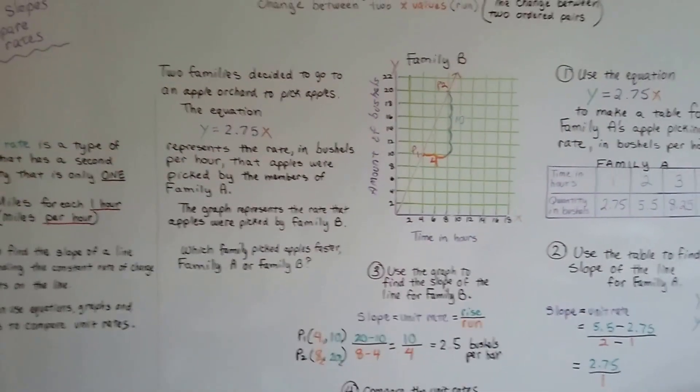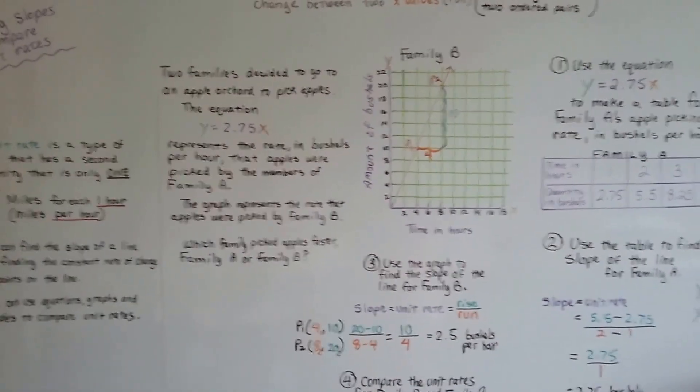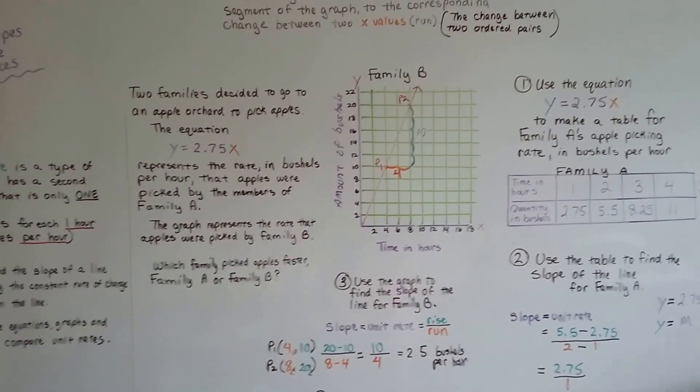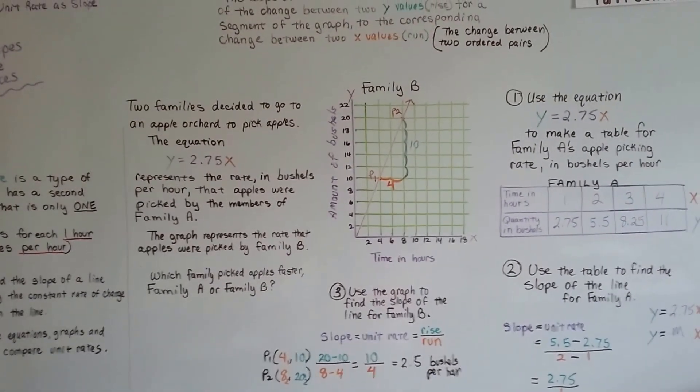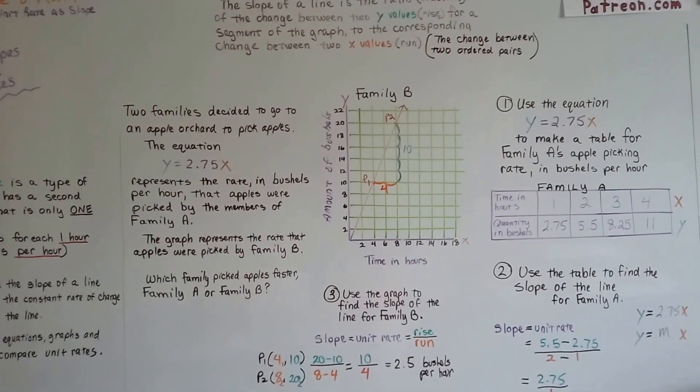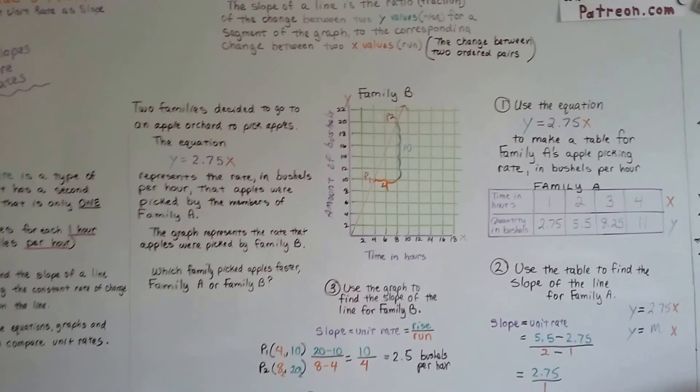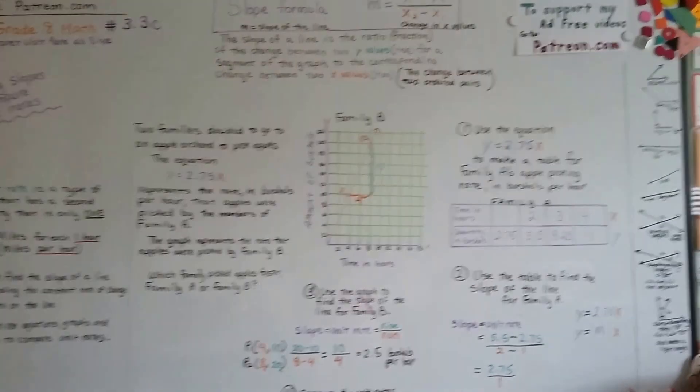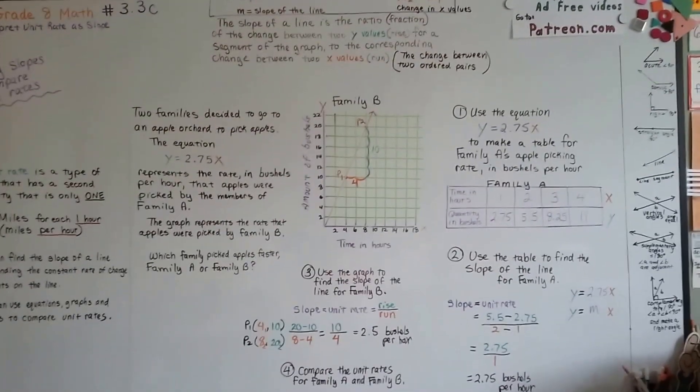So that's using slopes to compare unit rates. And we're going to continue on and we're going to talk about non-proportional relationships in the next unit. We're going to go on to unit 3.4 with non-proportional relationships. I hope I'll see you there.